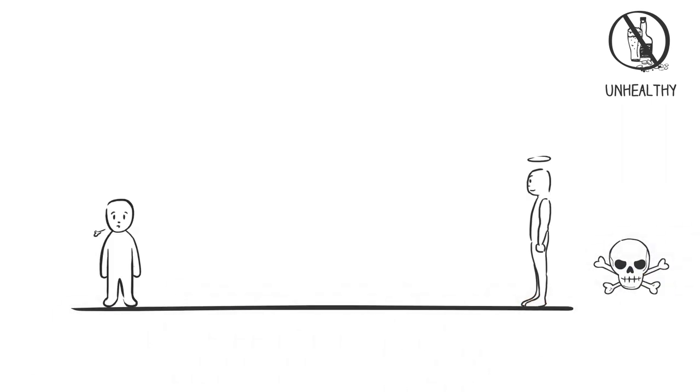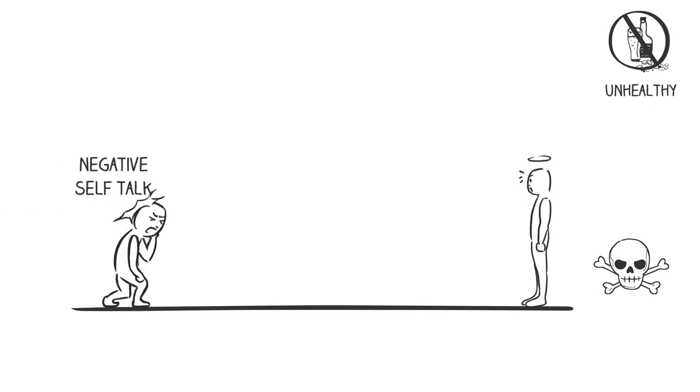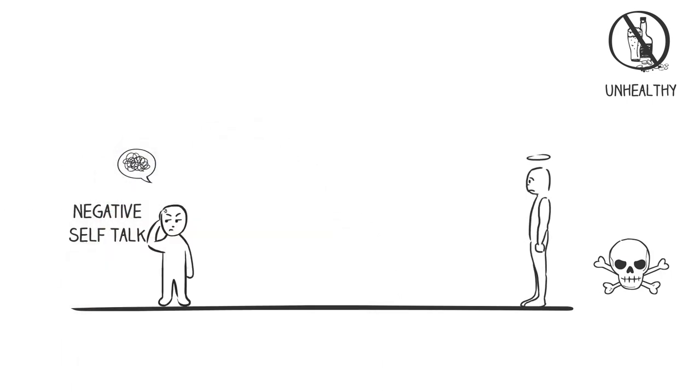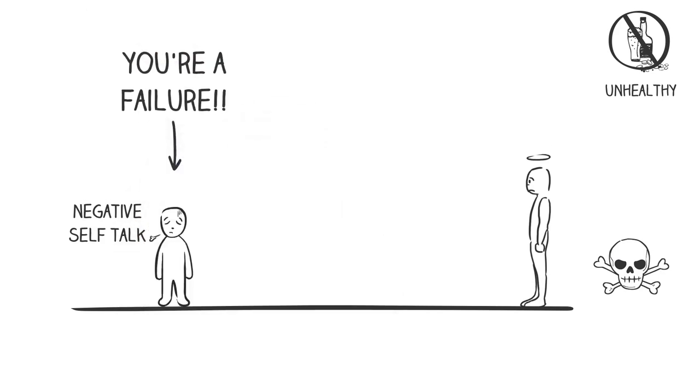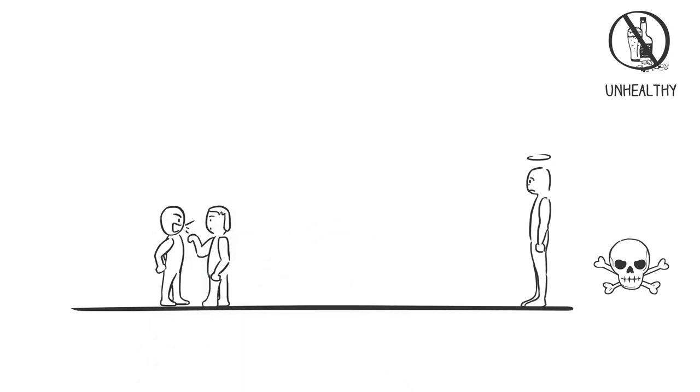Some examples of unhealthy strategies are negative self-talk, such as 'You're a failure.' This can make the situation and the future seem hopeless. Yelling, getting into arguments with others, or behaving aggressively can damage relationships and make us feel out of control.